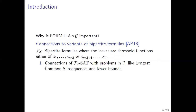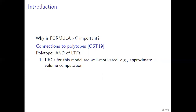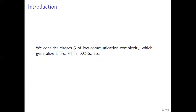There are also connections to polytopes. A polytope is an AND of linear threshold functions, and this is again a particular instantiation of this more generic class. Pseudorandom generators for this model are well-motivated because they can be used to approximately compute the volume of these polytopes, which is important in linear thresholds. As the title suggests, we are going to focus on classes G of low communication complexity that generalize all of the previous instantiations — like parities, linear threshold functions, and polynomial threshold functions.